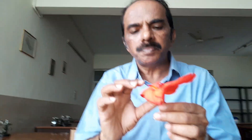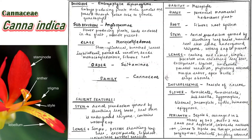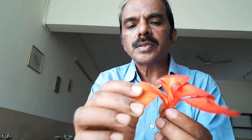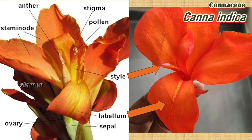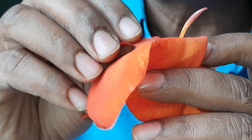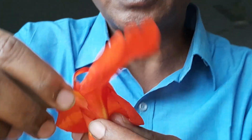When it comes to the androecium, it is unique in the case of Canna. There are six stamens and these six stamens are actually modified to form staminodes. There are three staminodes — staminode one, two, and three. The two inner anthers are fused to form a labellum. The innermost anther forms a half staminode and half fertile anther. This is the style and stigma.